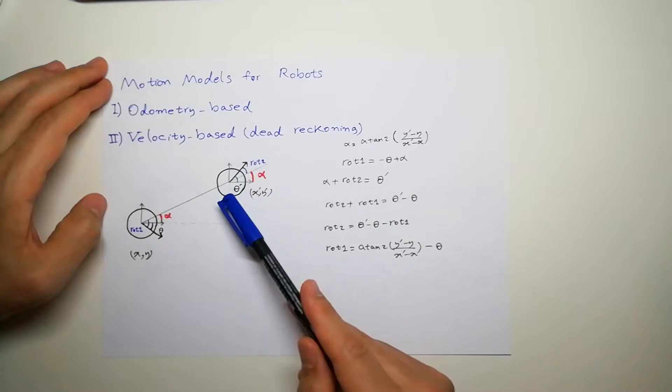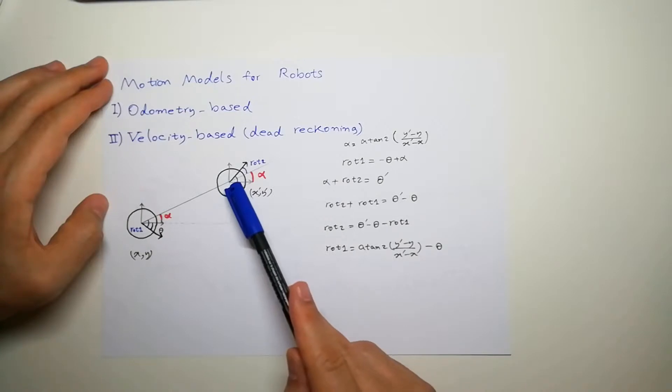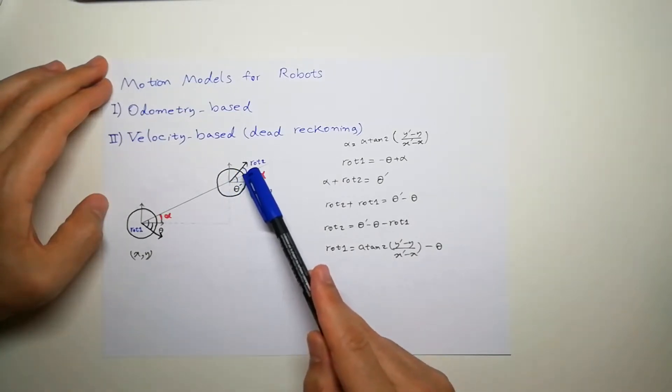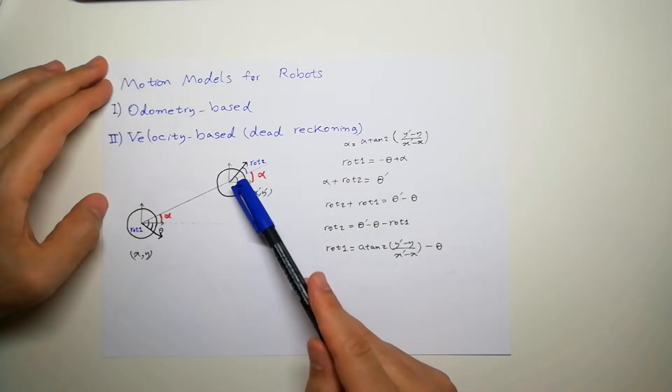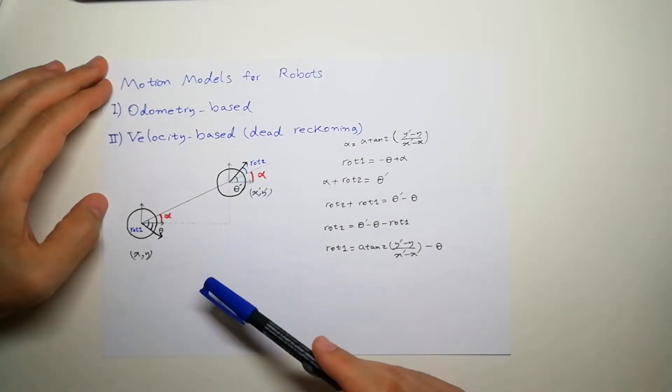Or delta x and delta y actually, because x and y is the pose of the robot, and x prime y prime is the new pose. And again, it has been rotated by rotation 2, so the robot has ended up in the new position.